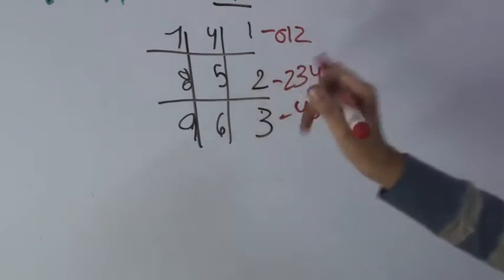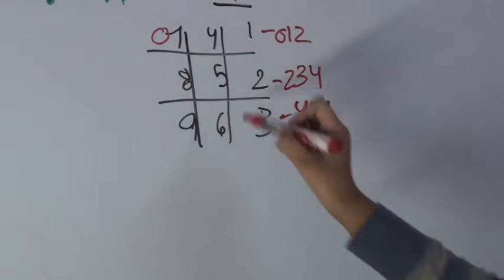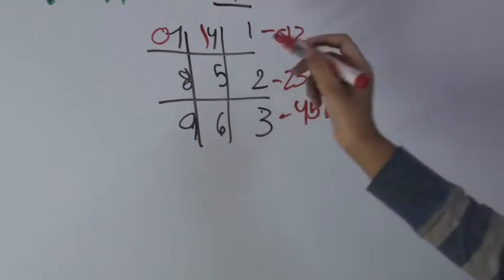So you're going to take the zero over here and place it in front of the seven. The one over here in front of the four, and the two in front of the one.